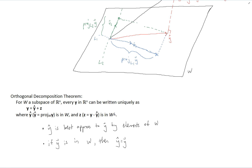Overall, we have seen how to find an orthogonal projection onto any subspace and what the projection means. We have also seen how to find the distance between a vector and a subspace by looking at the difference of the vector and its projection. These concepts form the foundation for many advanced algorithms, one of which will be explored in a later video.